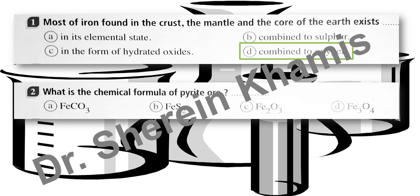Question number 2. What is the chemical formula of pyrite ore? We have choice A: FeCO3 (iron 2 carbonate), choice B: FeS2 (iron 2 sulfide), choice C: iron 3 oxide, and choice D: Fe3O4. Pyrite ore means it reacts with sulfur, so the right answer is FeS2 — choice B.